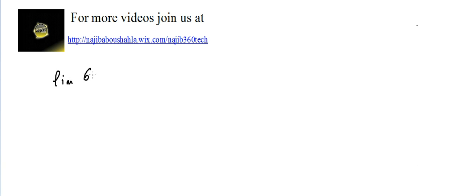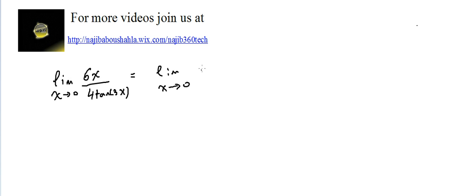Okay, limits video number eight. Let's do this one: limit of 6x over 4 times tangent(3x) as x approaches 0. This is equal simply to the limit as x approaches 0. Let's take 2 from the 6 outside.